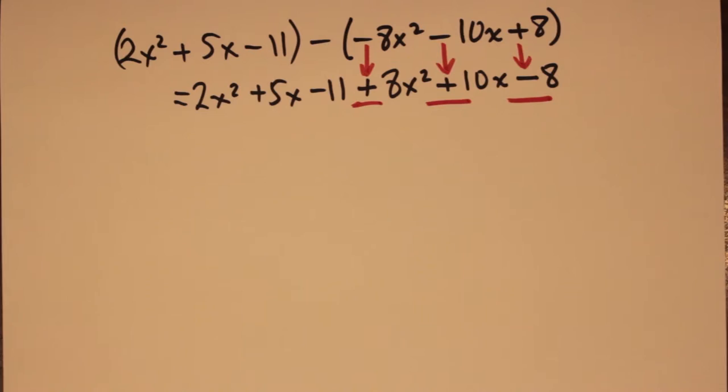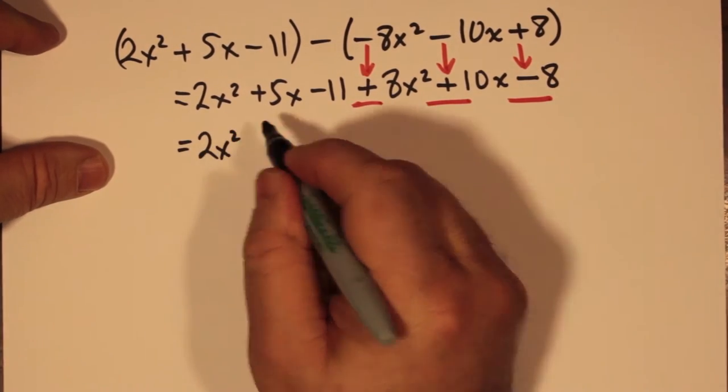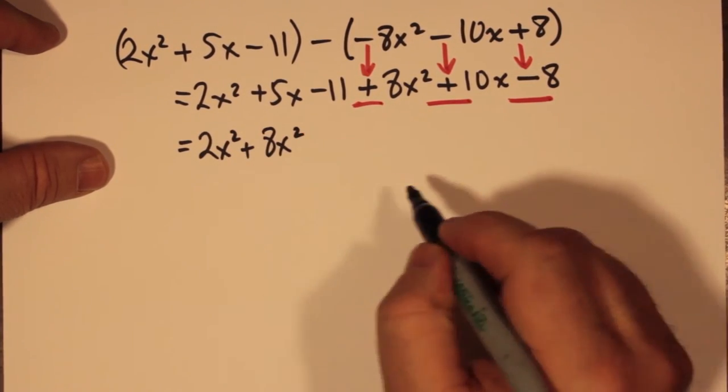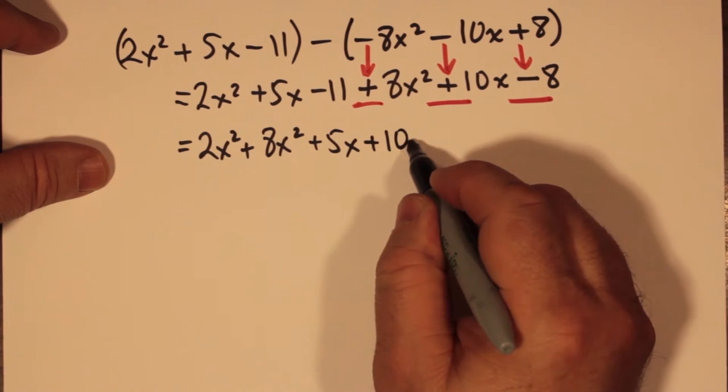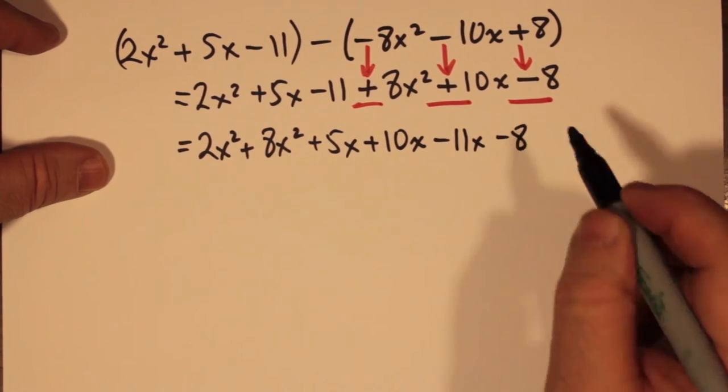When we gather our like terms, we find out we have 2x and 8x, and we also have 5x and 10x, and we have 11 minus 8.